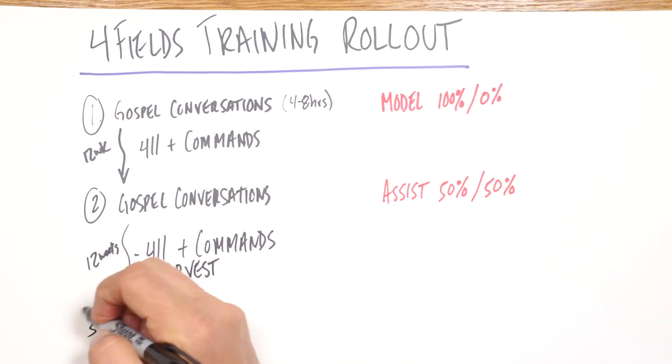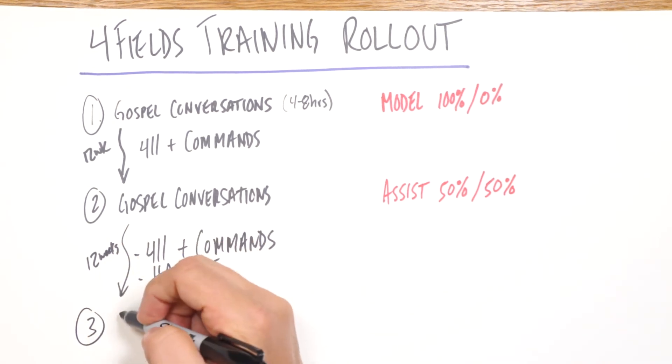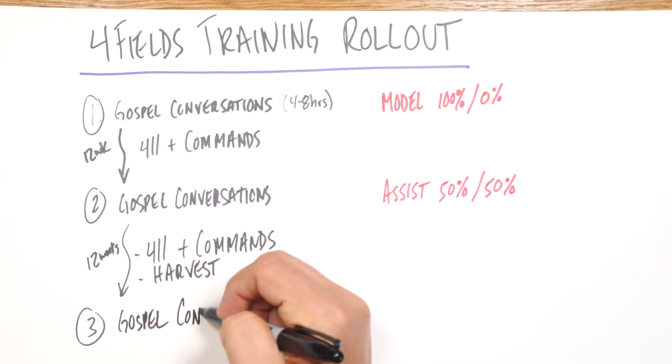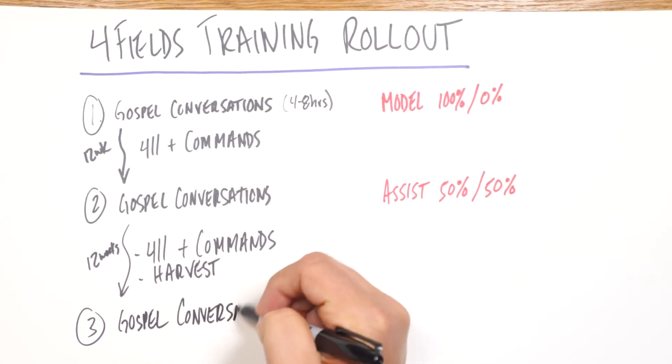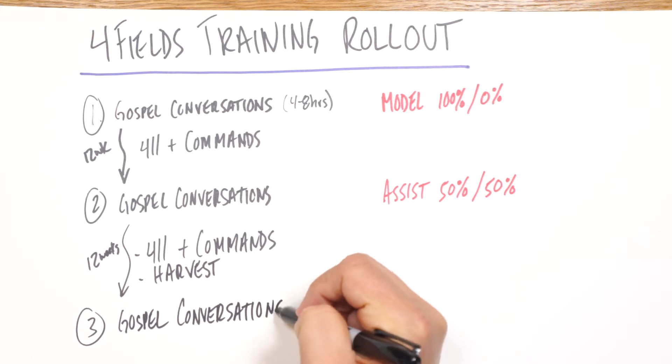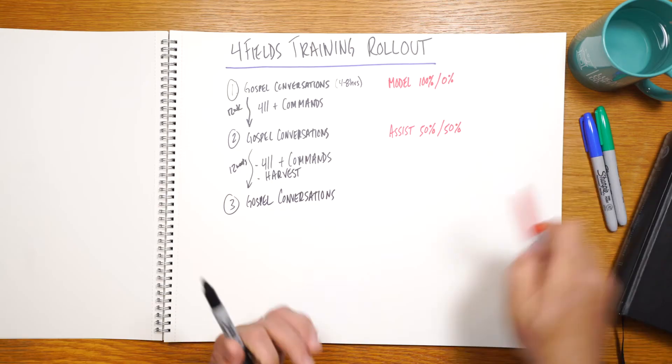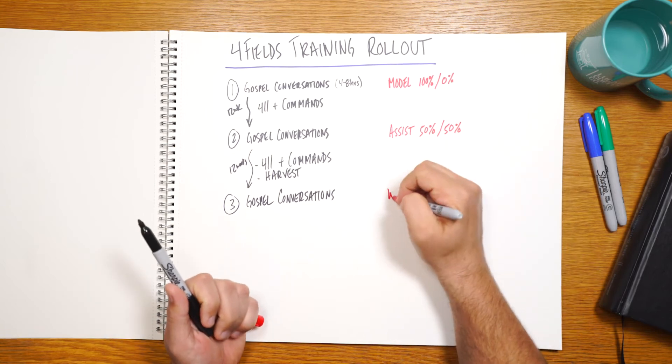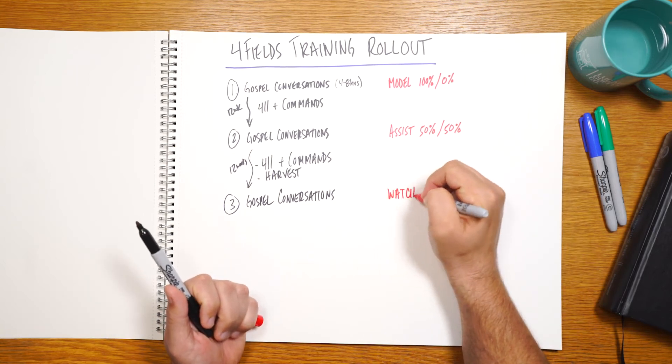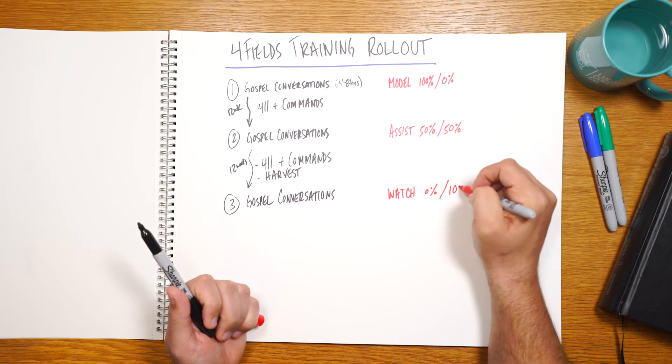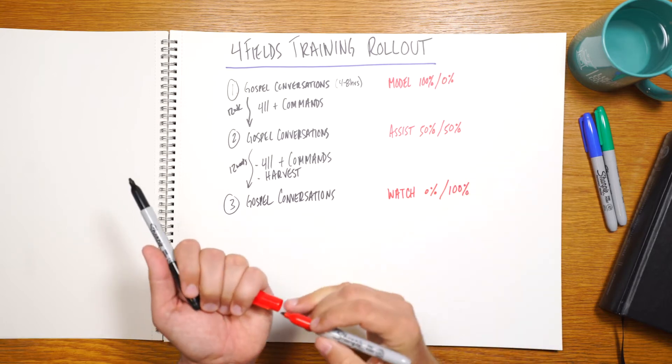And then the third touch of training, again, we come back and do another round of gospel conversations. And again, this is the same training each time, very similar schedule each time. But this time, it is going to be a watch. So we're watching them lead the training. So the outside trainers are doing zero. The local trainers are doing 100% of the training.